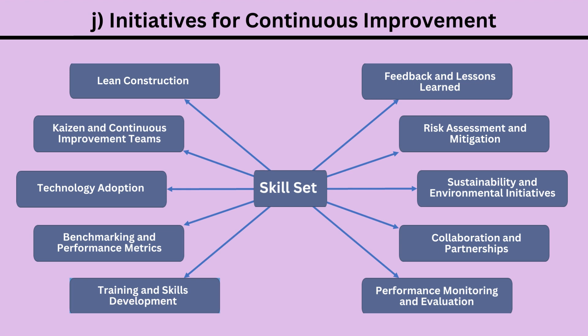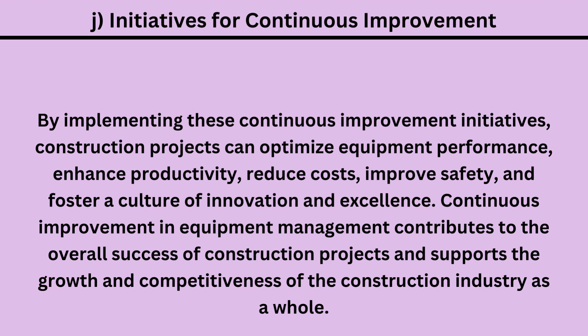More information regarding construction equipment programs for continuous improvement can be found here: 1. Lean Construction, 2. Continuous Improvement Teams, 3. Technology Adoption, 4. Benchmarking and Performance Metrics, 5. Training and Skills Development, 6. Feedback and Lessons Learned, 7. Risk Assessment and Mitigation, 8. Sustainability and Environmental Initiatives, 9. Collaboration and Partnerships, 10. Performance Monitoring and Evaluation. By implementing these continuous improvement initiatives, construction projects can optimize equipment performance, enhance productivity, reduce costs, improve safety, and foster a culture of innovation and excellence. Continuous improvement in equipment management contributes to the overall success of construction projects and supports the growth and competitiveness of the construction industry as a whole.